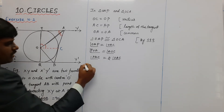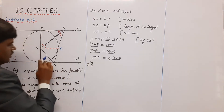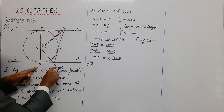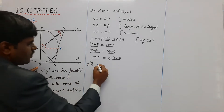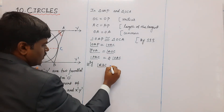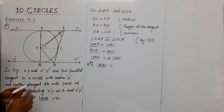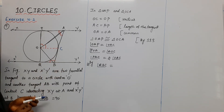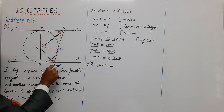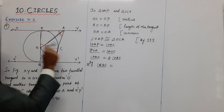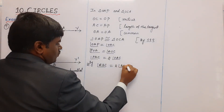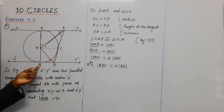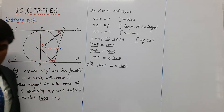Similarly, using the same concept with the congruent triangles at point B, we conclude that angle QBC equals two times angle BOC.